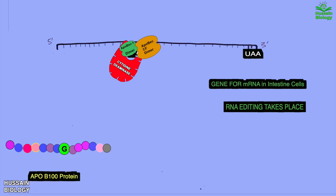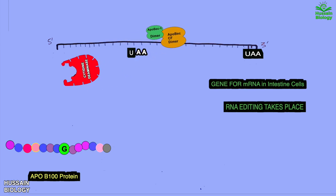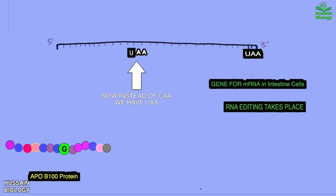And then this editosome mediates the RNA editing process thereby converting the cytidine to uracil. So during this editing the cytidine deaminase converts the cytidine to uridine, and we get the uridine in place of cytidine, which converts the codon from CAA to UAA.